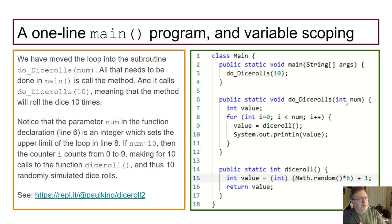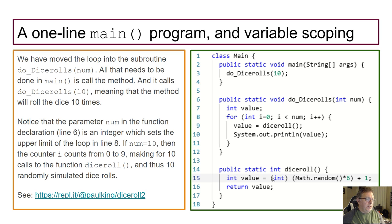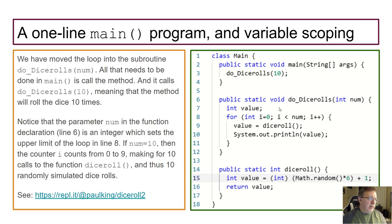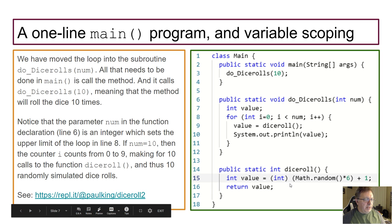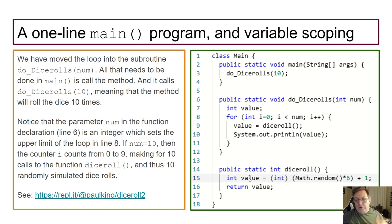We call doDiceRolls from main, and notice how clean main becomes — it has exactly one line. All the complexity is moved into the functions and subroutines. doDiceRolls is declared with a return type of void, so it's a method — it doesn't return anything, it just does something. It rolls the dice 'num' times by calling the diceRoll function. Note that the formula can go directly to the return statement without being stored in a separate variable first.